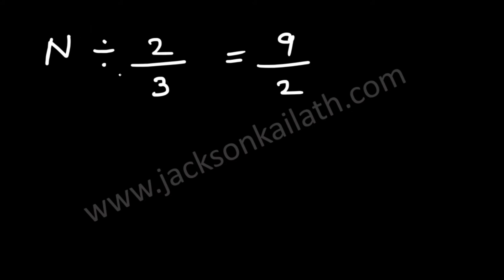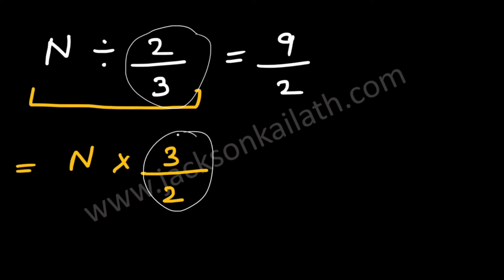Alright, so that means N divided by 2/3 is equal to 9/2. Now, N divided by 2/3 is nothing but N times the inverse of 2/3. So that's equal to N times 3/2. So the inverse of 2/3 is 3/2.